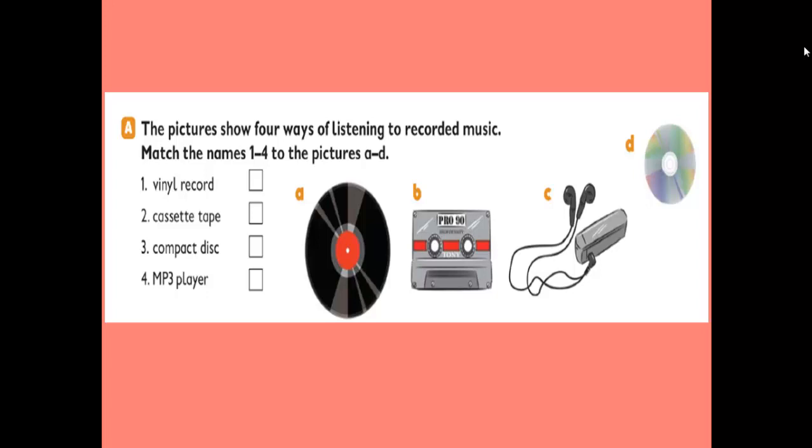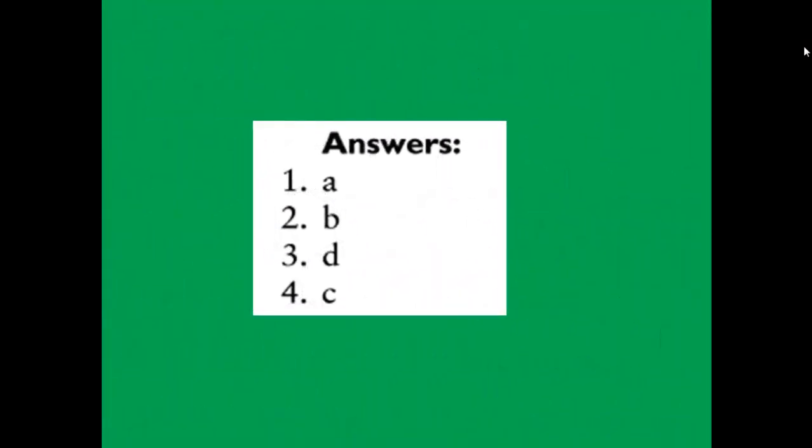Match the names from 1 to 4 to the pictures from A to D. We have: number one, vinyl record; number two, cassette tape; number three, compact disc; number four, MP3 player. And on the right we have four pictures, A, B, C, and D. The first picture is vinyl record.